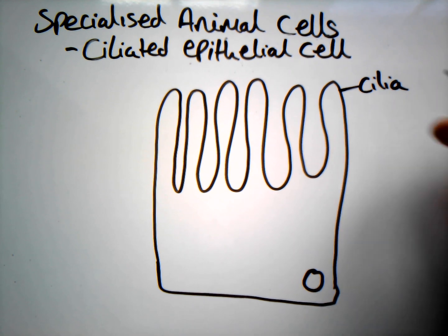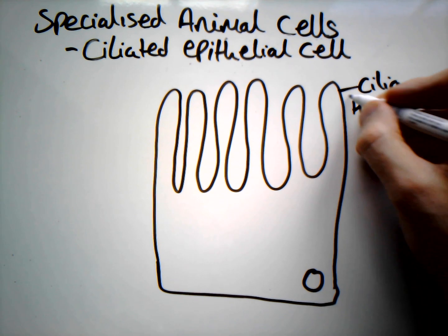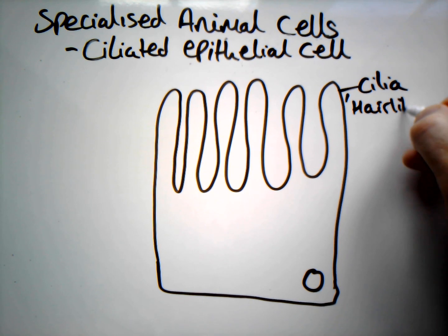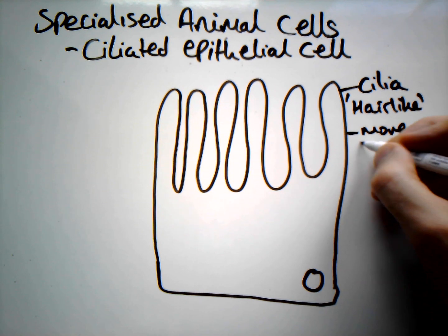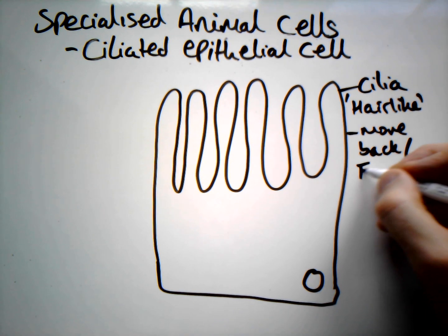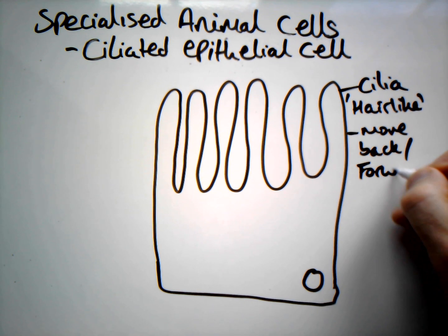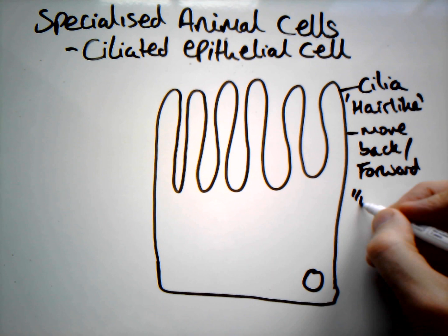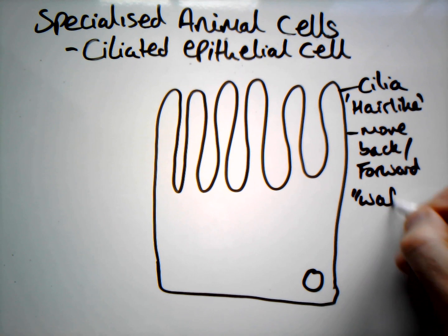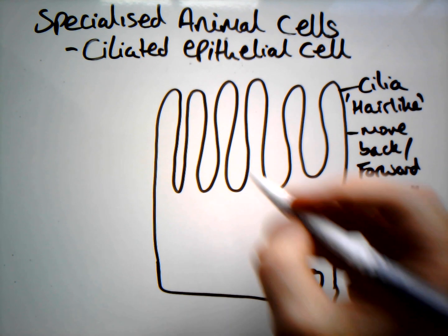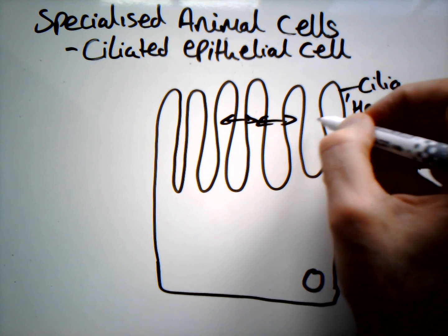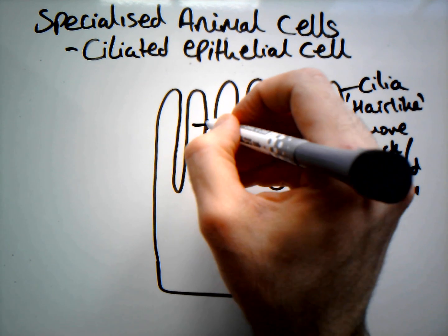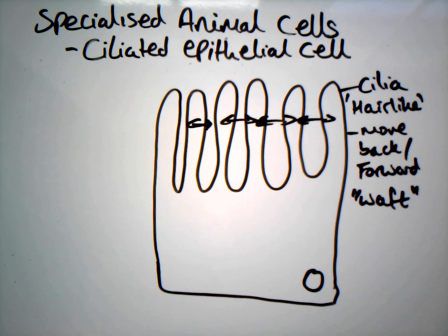These cilia are hair-like structures that move backwards and forwards — or as I like to say, they waft. They go from side to side in a sort of Mexican wave motion. This is really important for their function.